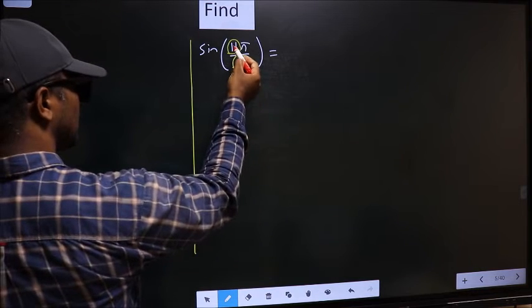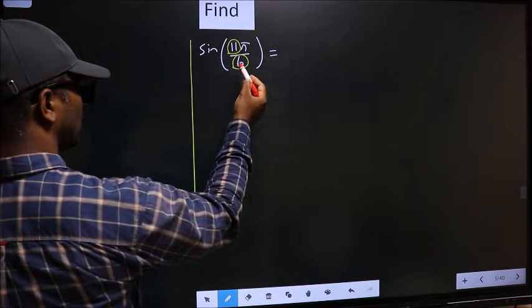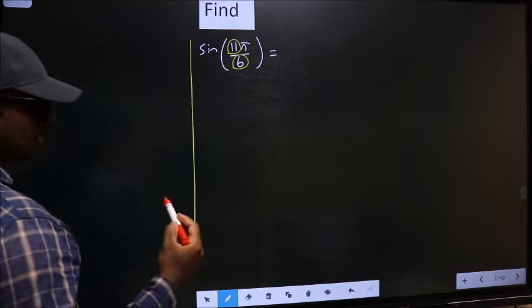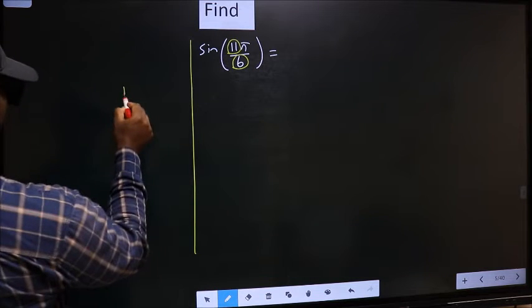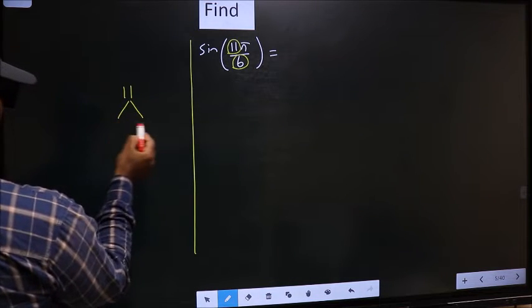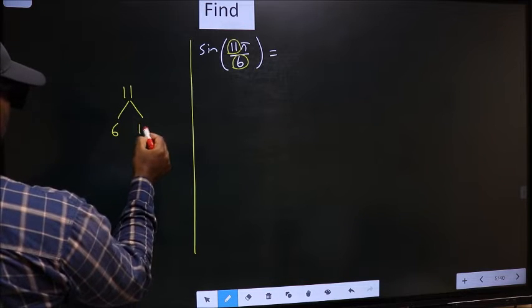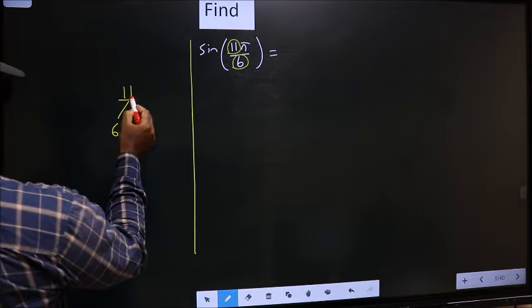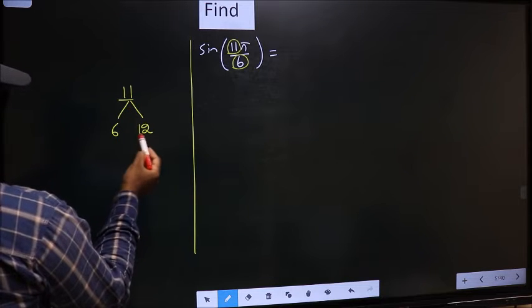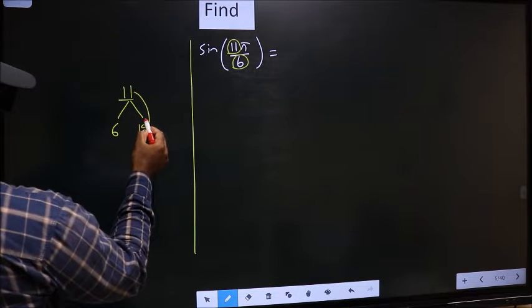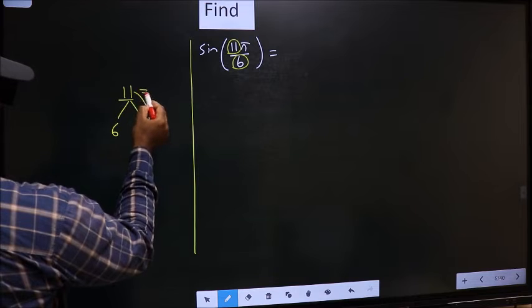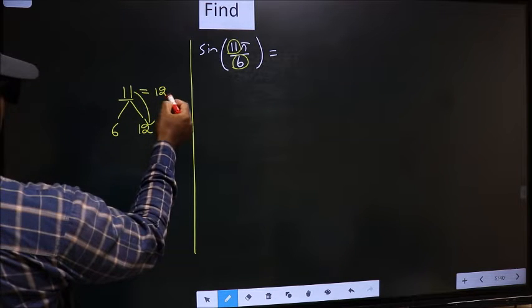Now you should check 11 is close to which multiple of 6. What I mean is 11 and here you write multiples of 6: 6 and 12. Now 11 is close to which multiple? This is close to 12. So now 11 should be written as 12 minus 1.